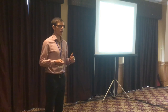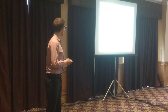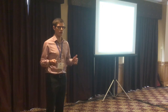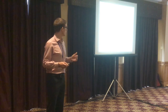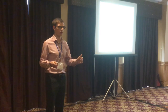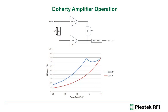The point of the Doherty amplifier is to improve back-off efficiency — that's really the key reason for being. This is really important for communications applications where we have modulated signals with high peak-to-average ratios. We're not going to be operating at full output power all the time. We show here in red the class B efficiencies, and you can see that at 0 dB back-off power level, we get theoretical efficiencies of 78.5%, but when we're backed off at maybe 10 dB or 6 dB, our efficiencies are much, much lower.